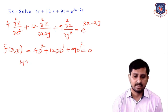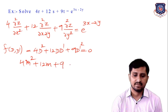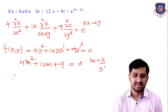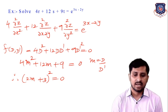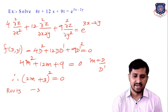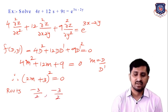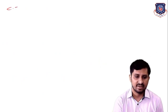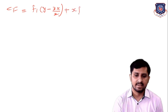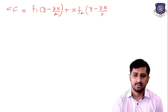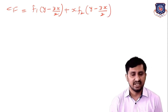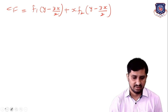This is a perfect square: (2m + 3)² = 0. The roots are equal: m = -3/2, -3/2. So the complementary function is f₁(y - 3x/2) + x·f₂(y - 3x/2), since -3/2 is a repeated root.